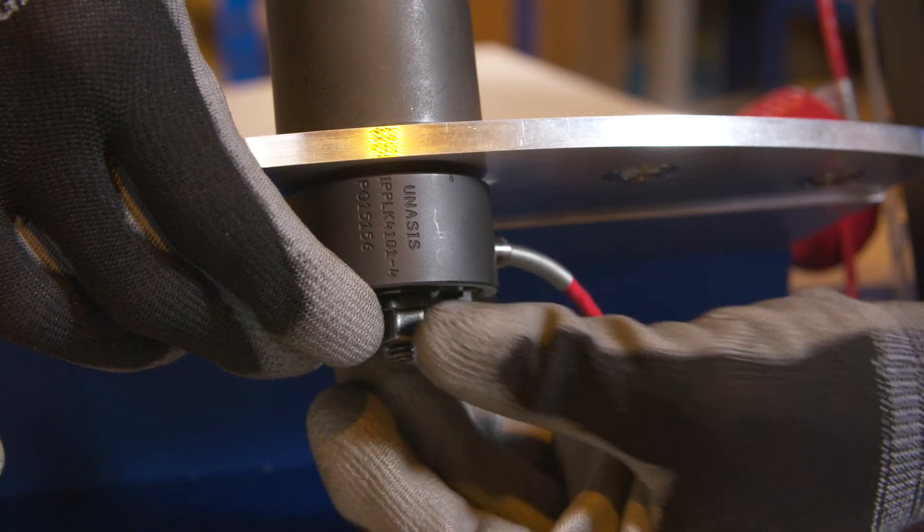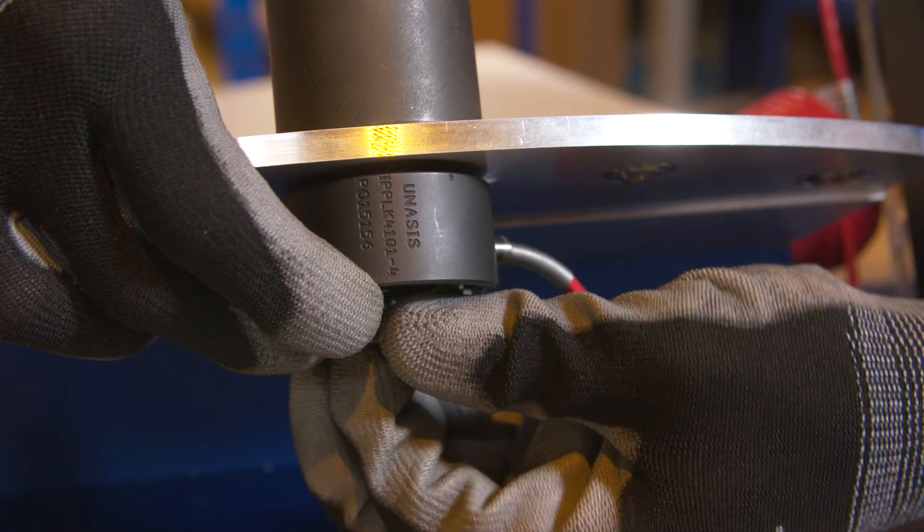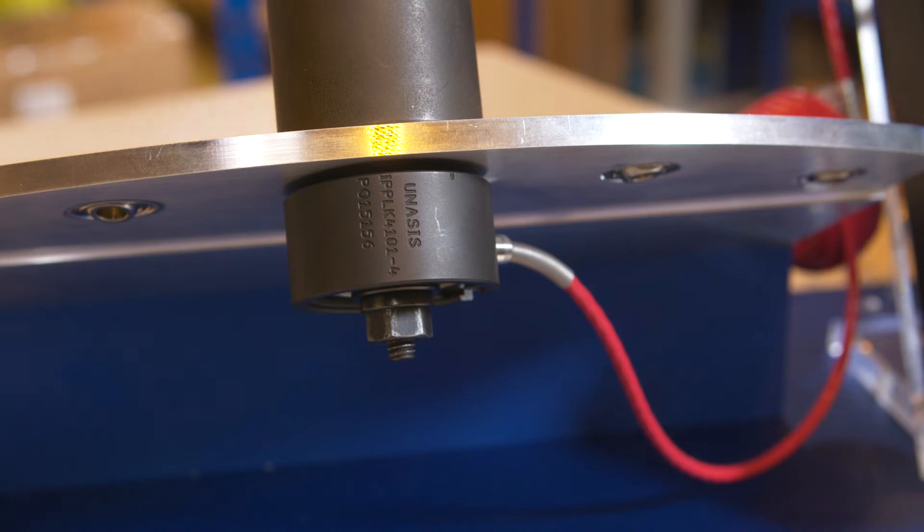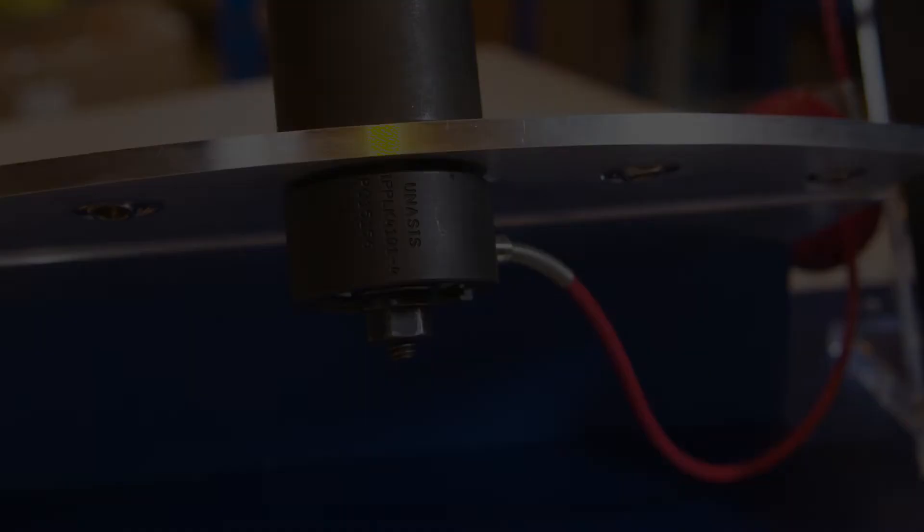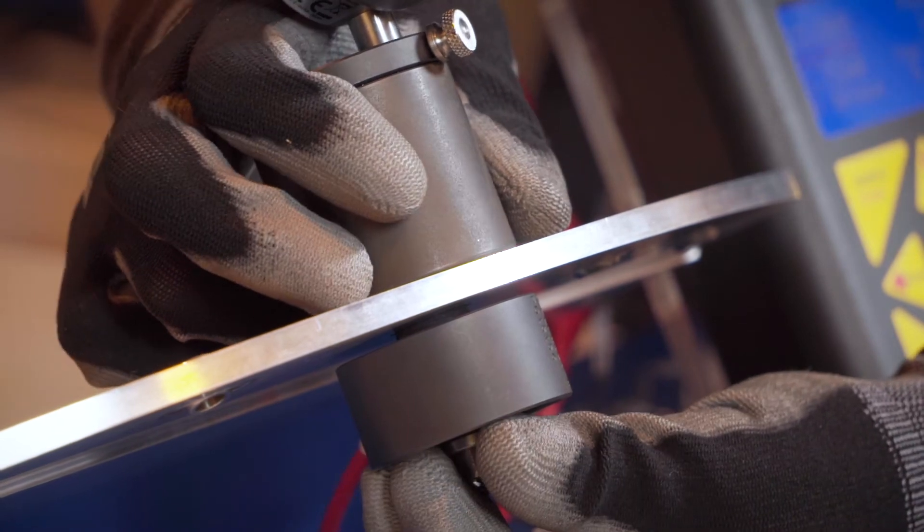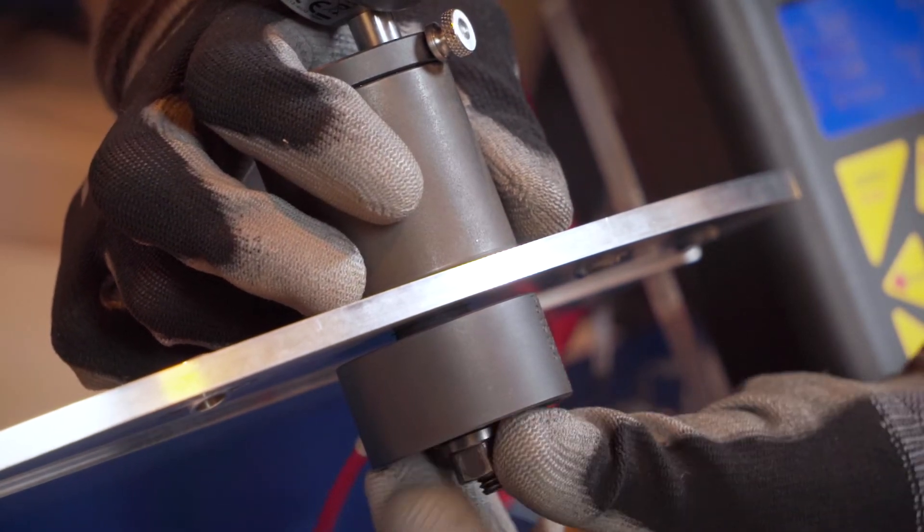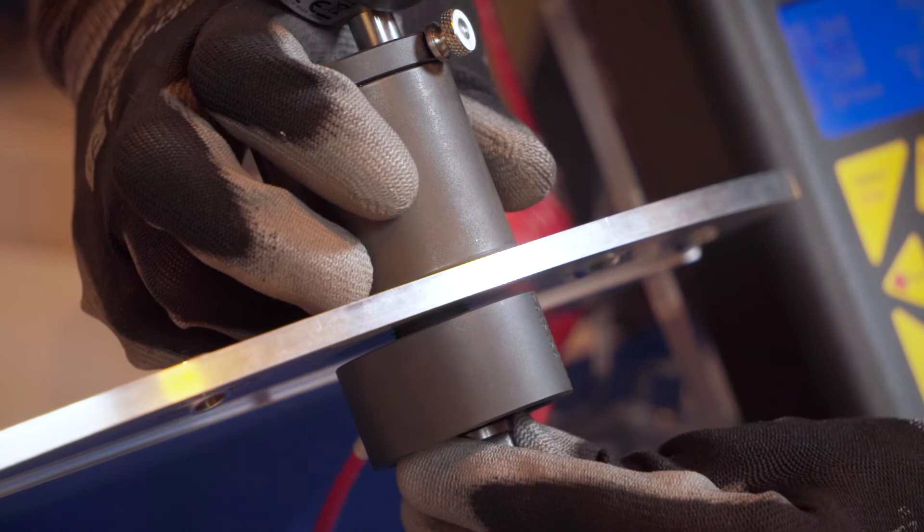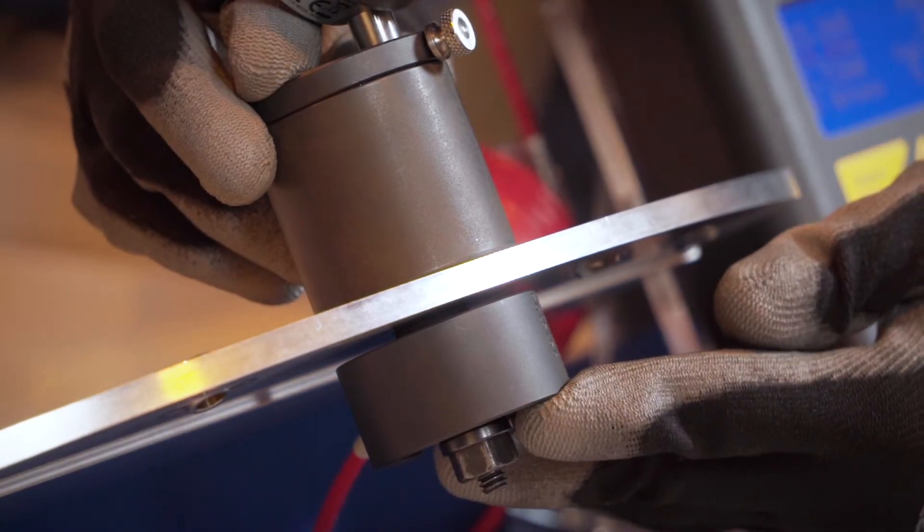Now thread the nut onto the draw rod and finger tighten. Make sure that there are no gaps between the components and the housing. Let the components self-align before loosening and finger tightening the nut again. Take care not to over-tighten so as to avoid excess pressure being applied prematurely.